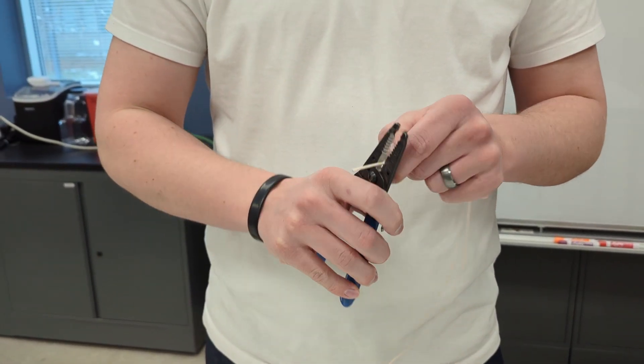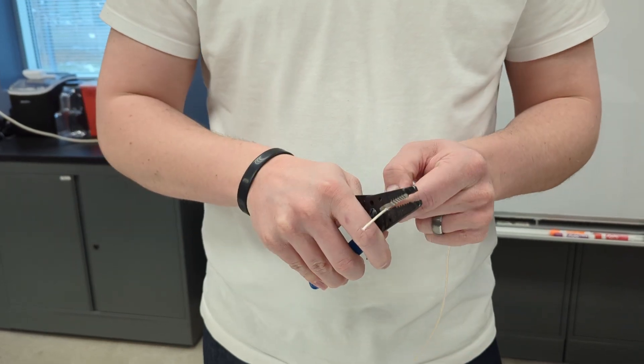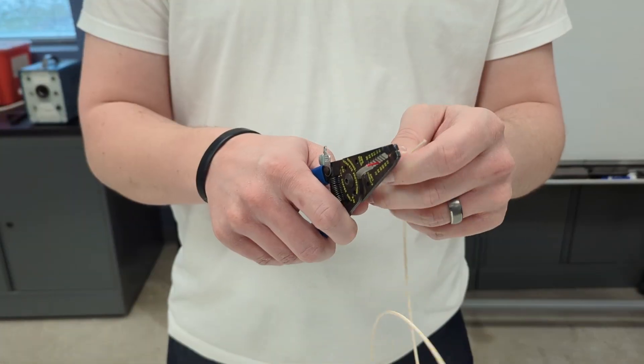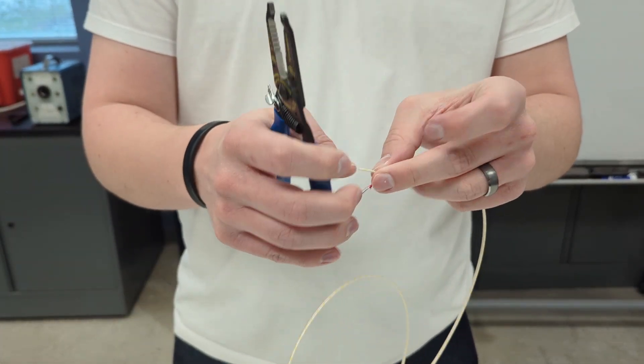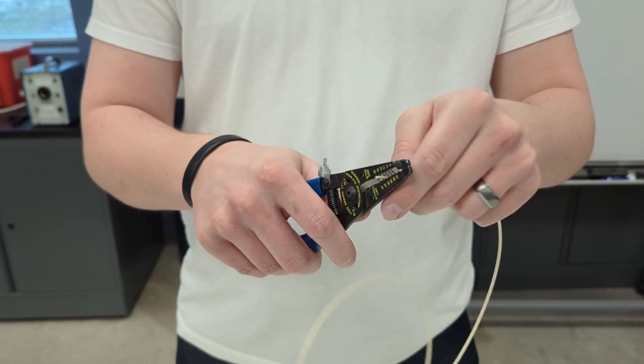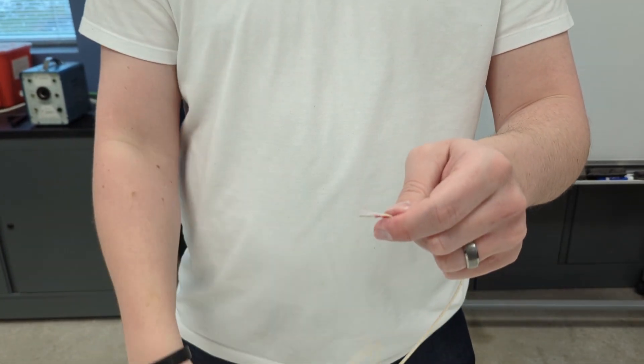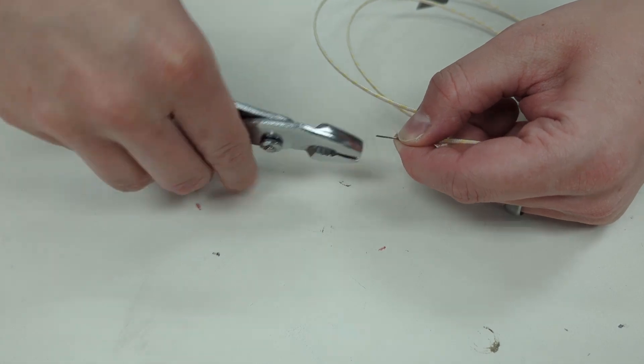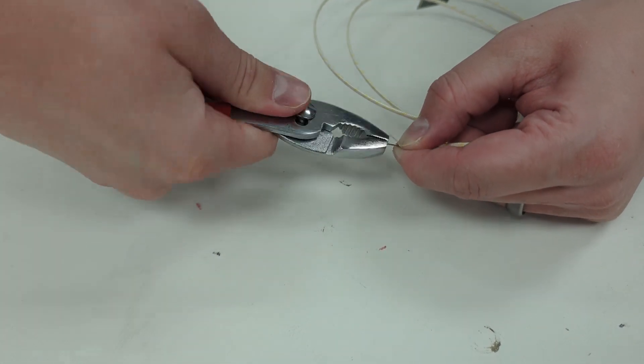Strip away about 1.5 inches of the outer sheathing from both ends of the thermocouple. Strip away about 1 inch of the inner sheathing from both leads off both ends of the thermocouple wire using wire strippers. Use pliers to create 2-3 even twists in the wire at the end that will be welded.